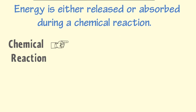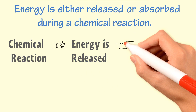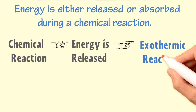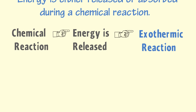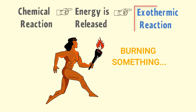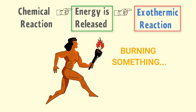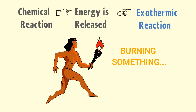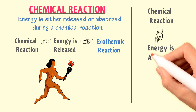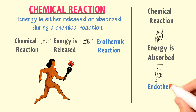The chemical reaction in which energy is given off or released to the surrounding is known as an exothermic chemical reaction. For example, when you burn something, you get heat energy — so burning something is an exothermic chemical reaction in which energy is released to the surrounding. That's why you feel hotness near the fire. While endothermic is a chemical reaction in which substances absorb energy from the surrounding.